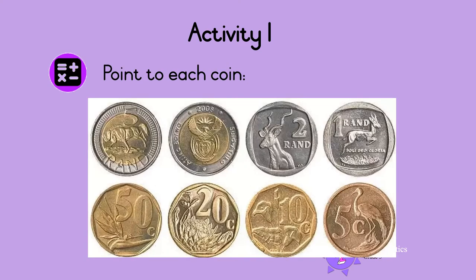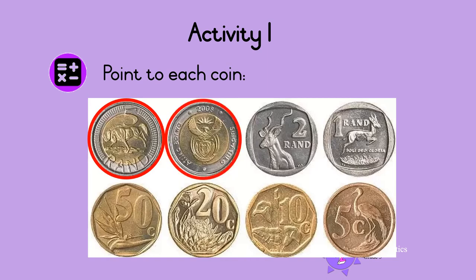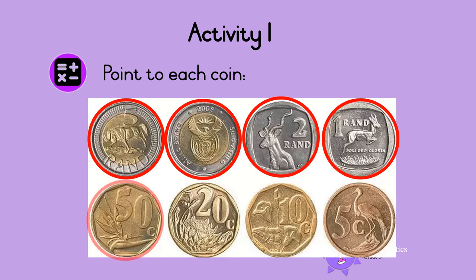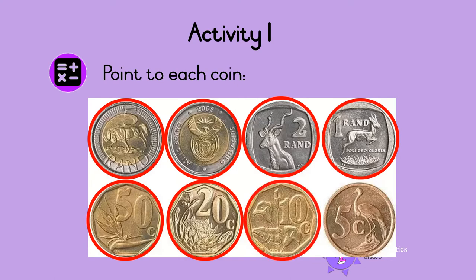Point to each coin. This is the 5 Rand coin. That is the other side of the 5 Rand coin. This is the 2 Rand coin. This is the 1 Rand coin. This coin is the 50 Cent coin. This is the 20 Cent coin. This is the 10 Cent coin. And this is the 5 Cent coin.